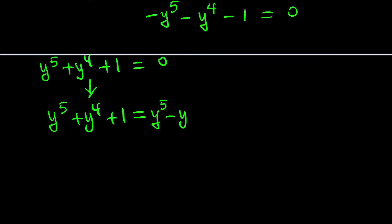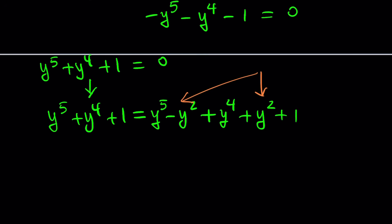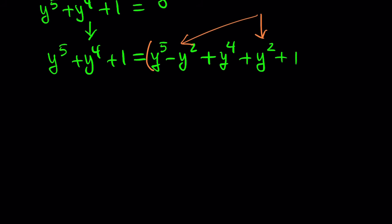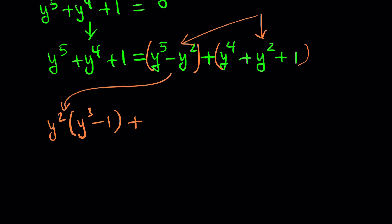I'm going to subtract y squared and add it back. The way I add it is going to be after the y to the fourth, because I need to follow the standard form. Then I'm going to split it up into two pieces. Notice that the negative y squared and the positive y squared cancel, leaving us with the original expression.